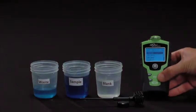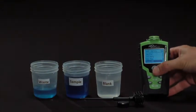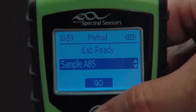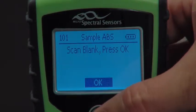We'll then scroll down to the method that we want to run, which in this case is sample ABS. We'll then press the center button to select the method and press the center button once more to start the method.